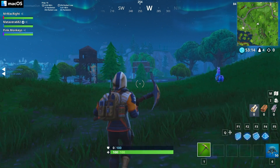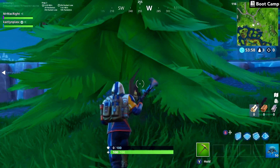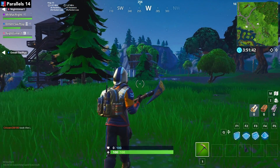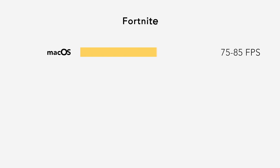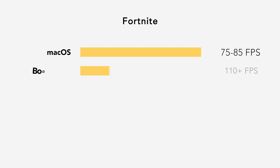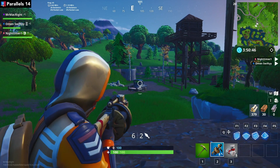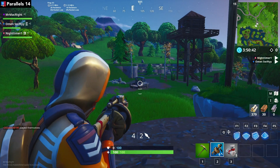Coming up next, we have the infamous Mac game Fortnite. I wanted to find a new high-end game that would work under all four environments, and Fortnite was that game. Under macOS, which utilizes the Metal framework, we are seeing an average frame rate of 75 to 85, and under Windows we are generally receiving over 110 FPS. The game worked under Parallels, but it was borderline unplayable, typically hitting less than 20 FPS and having issues with textures. VMware Fusion would not play the game, always freezing when I got to the main menu. Fortnite is a good example of the type of games you should not play under virtual programs.